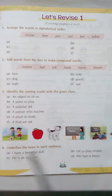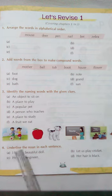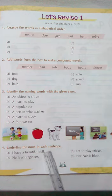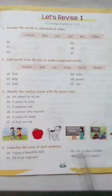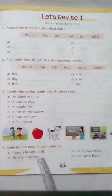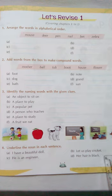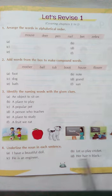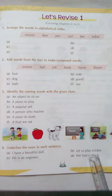Underline the noun in each sentence. So students, you have to underline the nouns here. I have a beautiful doll — doll is a thing and it is also a noun. Let us play cricket — here cricket is noun. He is an engineer — here engineer is noun. Her hair is black — here hair is the noun.